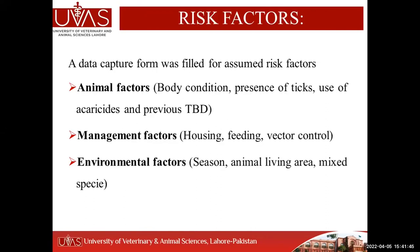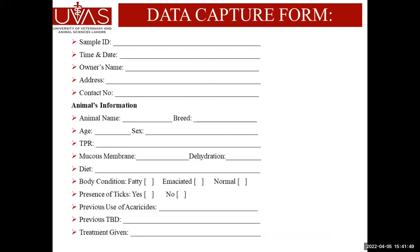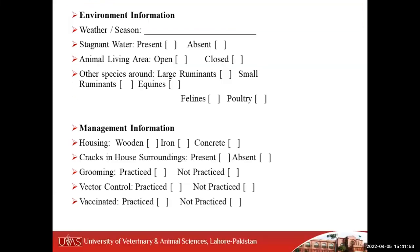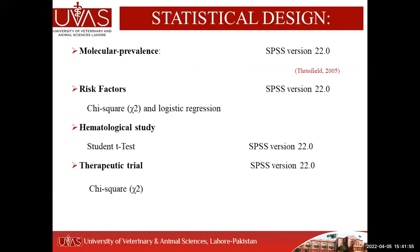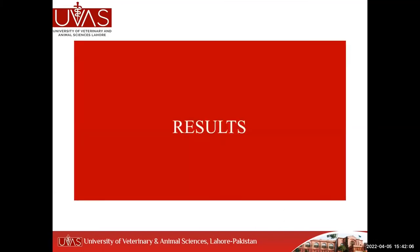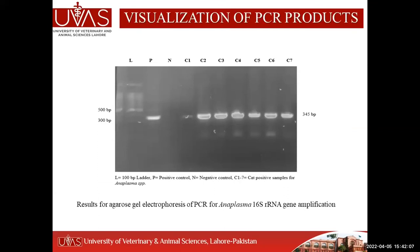Different risk factors were analyzed using a data capture form filled with information from owners, to identify major risk factors significantly associated with anaplasma infection in domestic cats. Various statistical tools were applied to the study data.